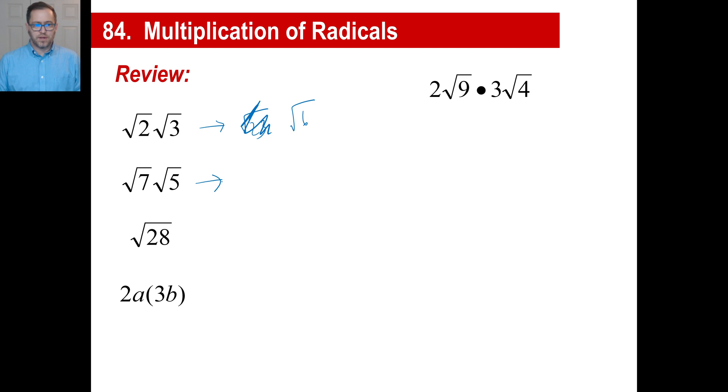The square root of 7 times the square root of 5 is the square root of 35.